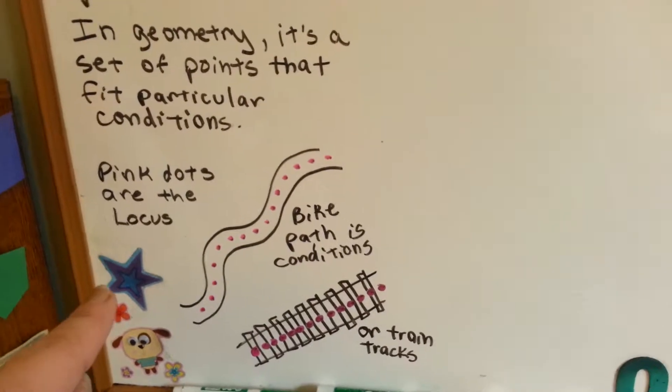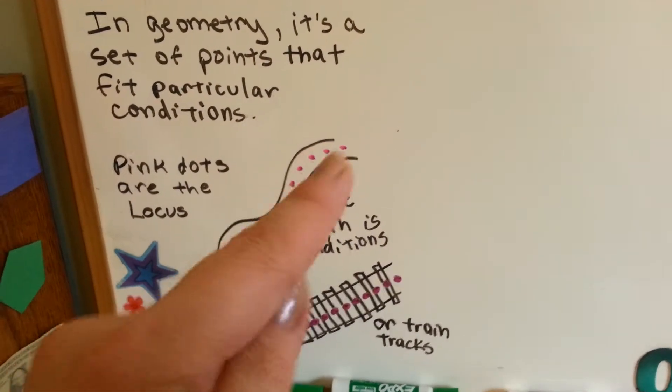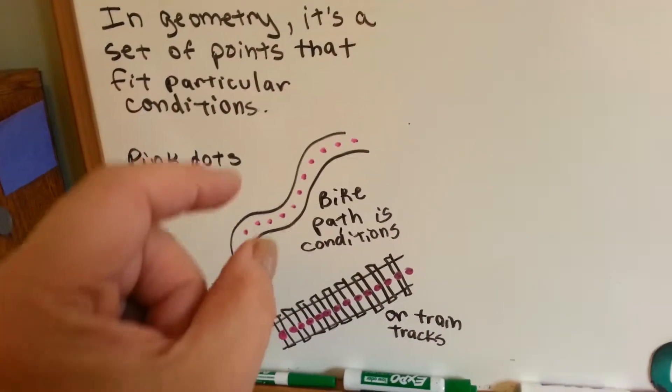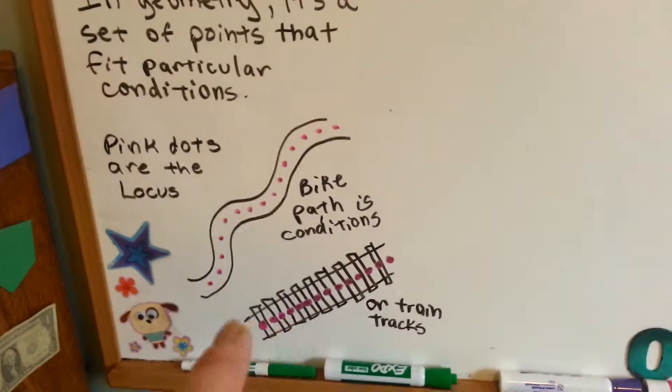And as I explained in the previous video, it's like these pink dots on a bike path. That's where you ride to not go off the path. What if this was lava on the side, so the conditions where you had to stay on the bike path?